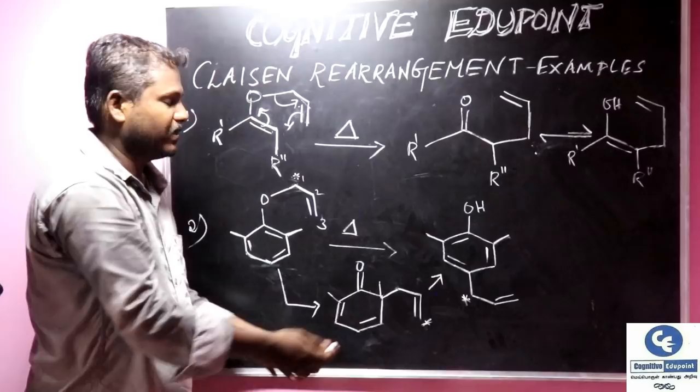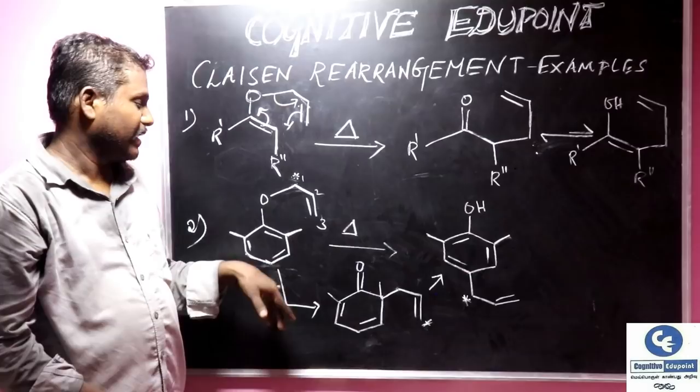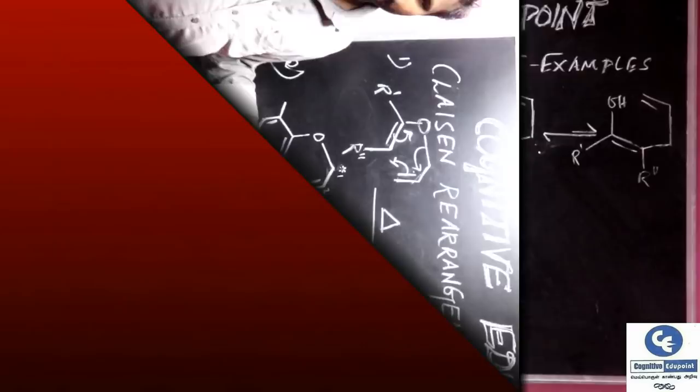If the para position is also blocked by bulky groups, the reaction will not take place. And in any cases, meta-substitution will not take place due to resonance of a phenol.